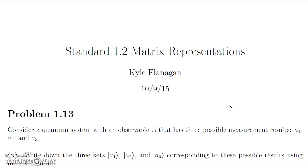It says to consider a quantum system with an observable A that has three possible measurement results: A1, A2, and A3. We know that A1, A2, and A3 are the three eigenvalues for the operator A that represents this observable. We know this from Postulate 3 of quantum mechanics, which states that all measurements correspond to the eigenvalues of the operator.